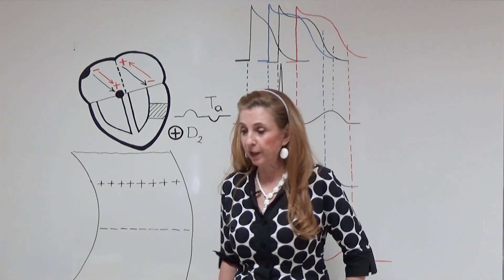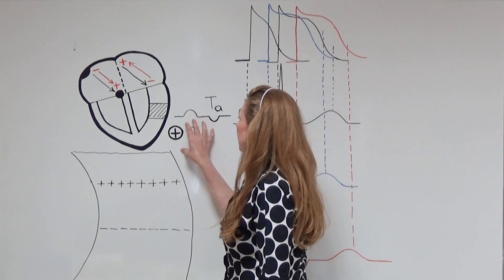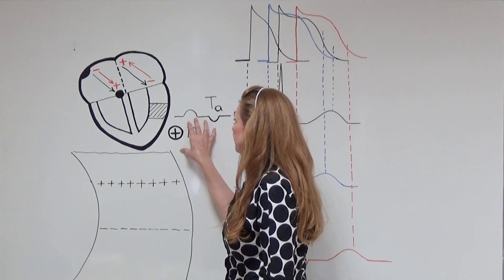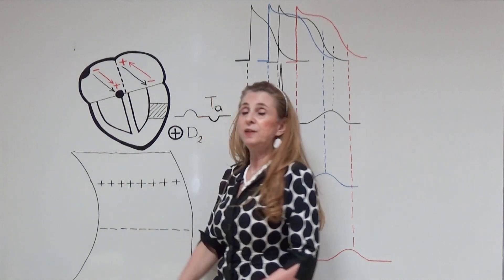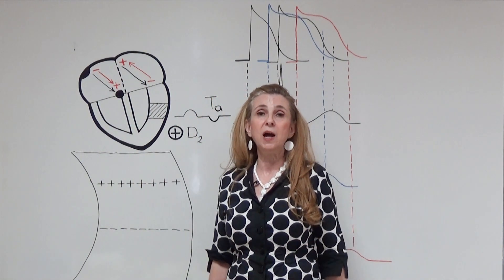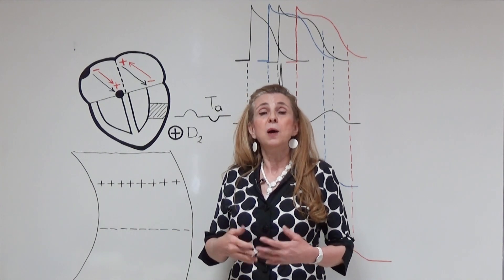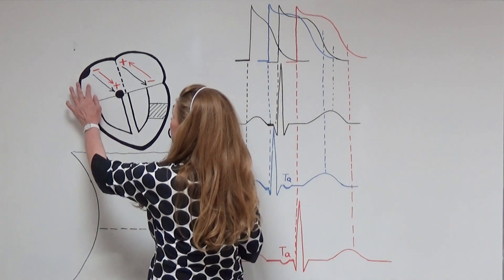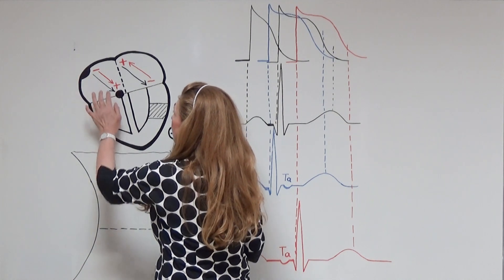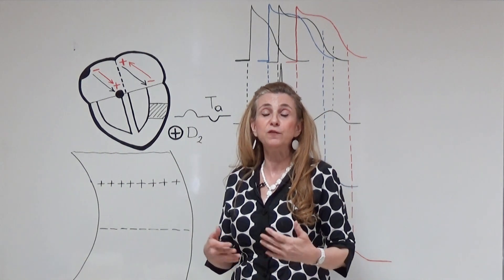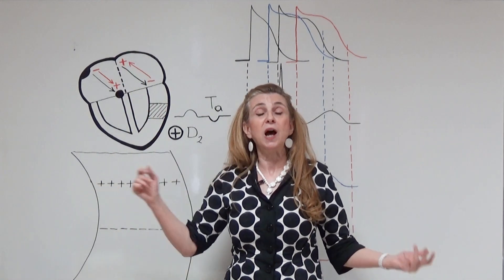So let us start with the atria. We are on the frontal plane, and as in the fifth video, I am still using the D2 electrode, which is at plus 60 degrees. Before any depolarization, all cells in the atria are at the resting membrane potential. Depolarization starts at the SA node and spreads towards the AV node — from upwards to downwards and from right to left.